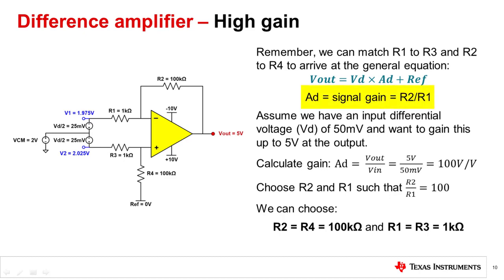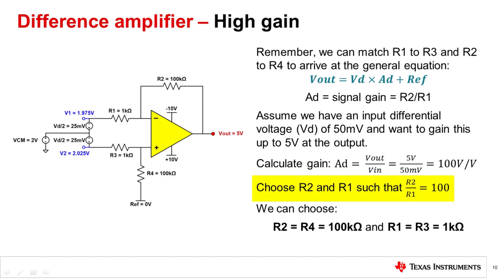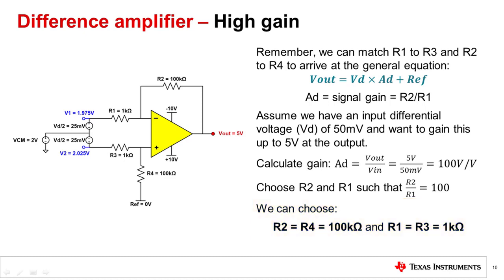As we previously defined, the gain of a difference amplifier is R2 divided by R1. We also discovered that we wanted R2 to match R4 and R1 to match R3. Assume we have an input differential voltage Vd equal to 50 millivolts in the presence of a 2 volt common mode voltage, and we want to amplify this to 5 volts at the output. We need a gain of 100 V/V, so we choose R2 and R4 equal to 100 kΩ and R1 and R3 equal to 1 kΩ. Our 1-amp IA extracted and amplified only the differential signal and rejected the common mode signal to yield the desired 5 volt output. The same way we were able to gain up the circuit, we can also attenuate larger voltages.